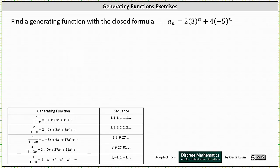We're asked to find a generating function with the closed formula a_n equals two times 3^n plus four times (-5)^n. To do this, we'll first determine a generating function for 2·3^n, then determine a generating function for 4·(-5)^n, and then sum the two generating functions to find a generating function for the given closed formula.